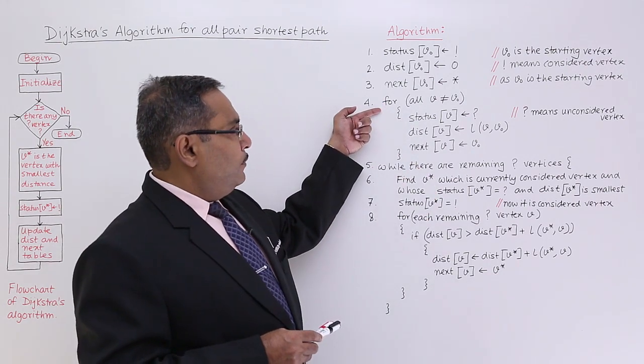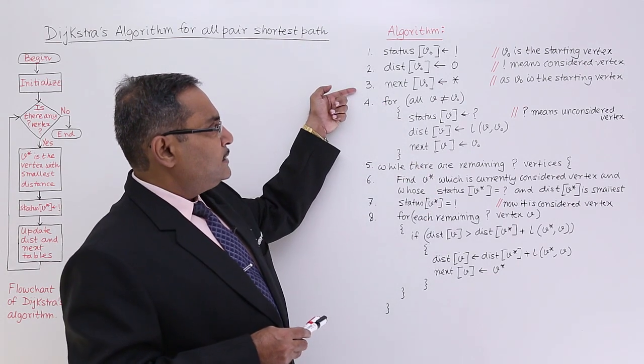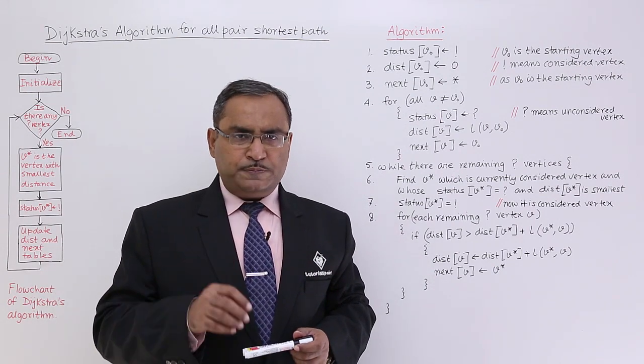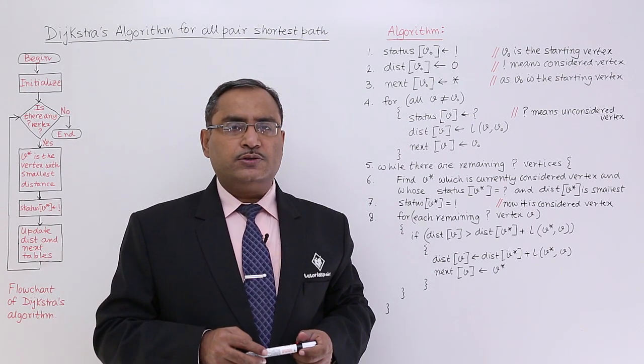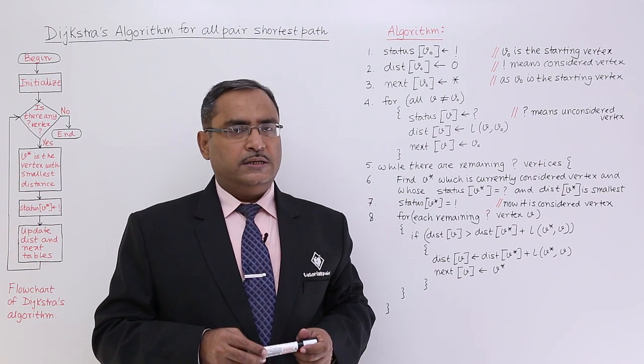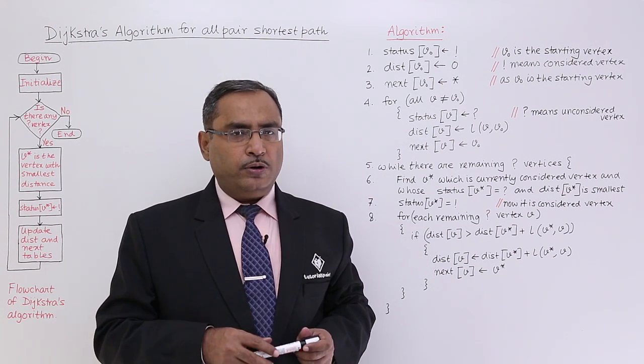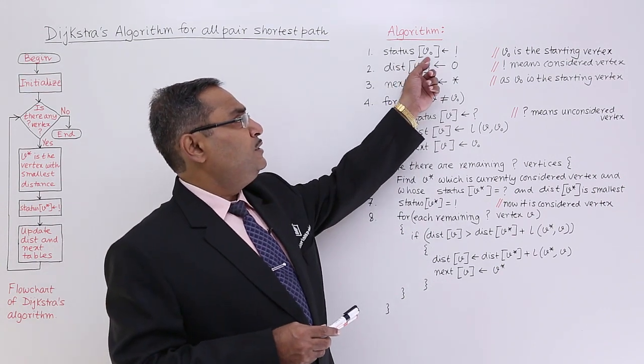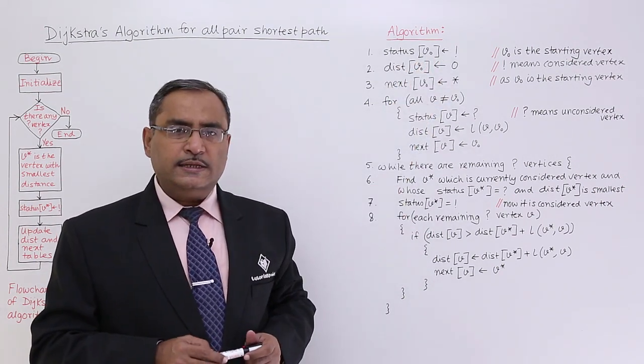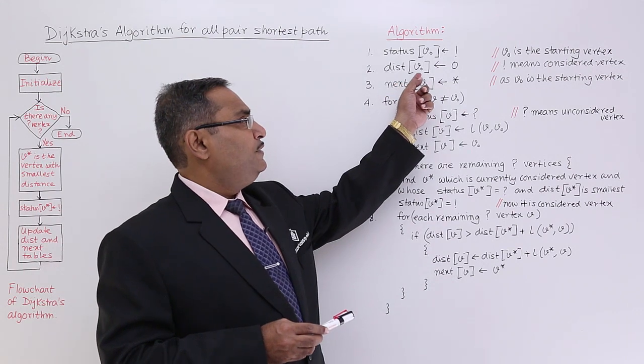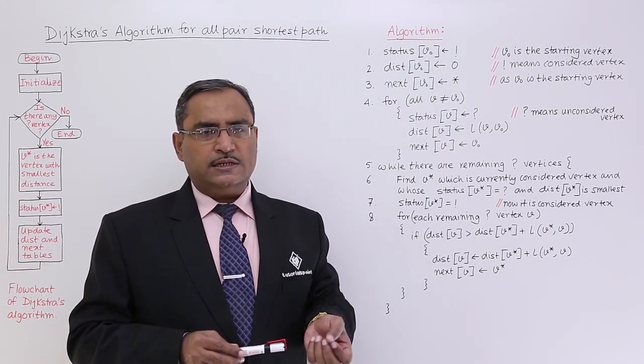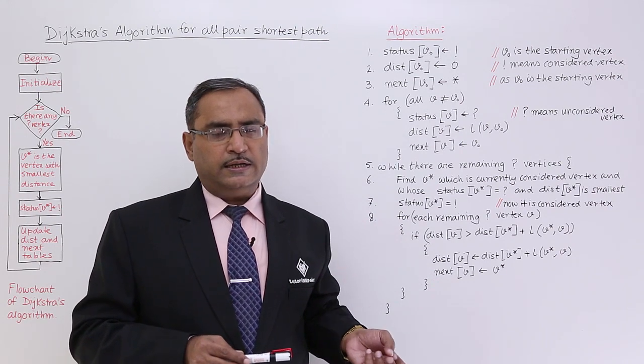Now, for the first three lines, what is V0? V0 is the starting vertex. So this particular Dijkstra's algorithm requires one arbitrary starting vertex and that will be denoted by V0 in the algorithm. For the starting vertex, status V0 is equal to exclamation means it has been considered. dist V0 is equal to 0 means as it is the starting vertex, so its distance from the measured vertex is 0 obviously, because it is the starting.